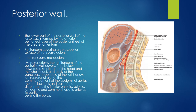The posterior wall also includes peritoneum covering the anterosuperior surface of the transverse colon, then the transverse mesocolon. More superiorly, the peritoneum of the posterior wall covers a small part of the head, part of the neck and body of the pancreas. In addition to this, it also lies in front of the upper pole of the left kidney, left suprarenal gland, the commencement of the abdominal aorta, celiac trunk, the upper part of the diaphragm, and then it reflects onto the posterior wall of the abdominal cavity.